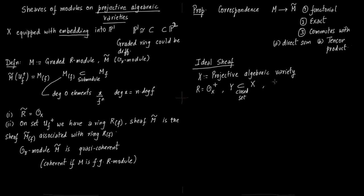So say some ideal I defines this closed set Y. Basically it could be a bunch of polynomials, and those polynomials generate this ideal I. Now you have an exact sequence.